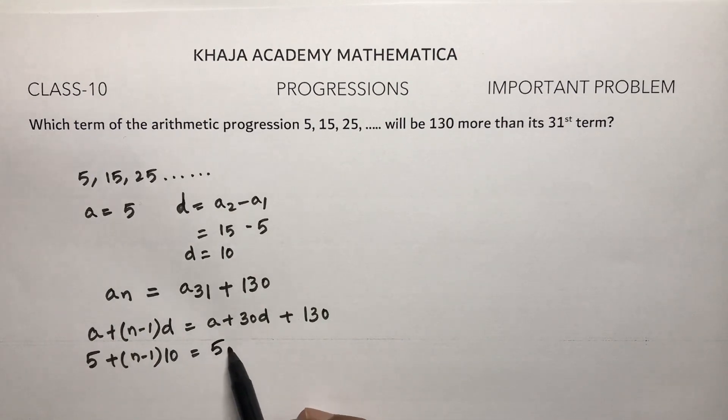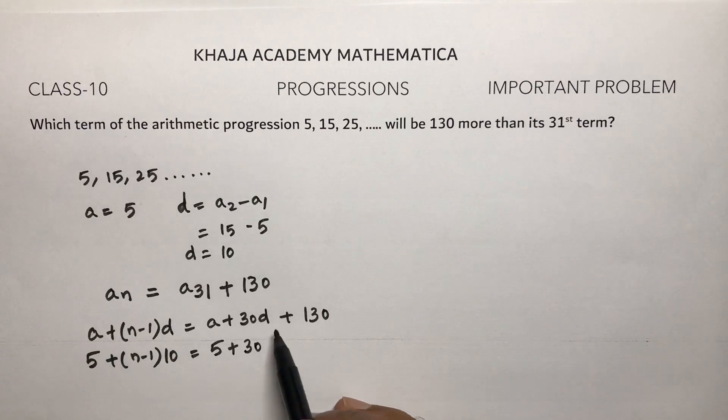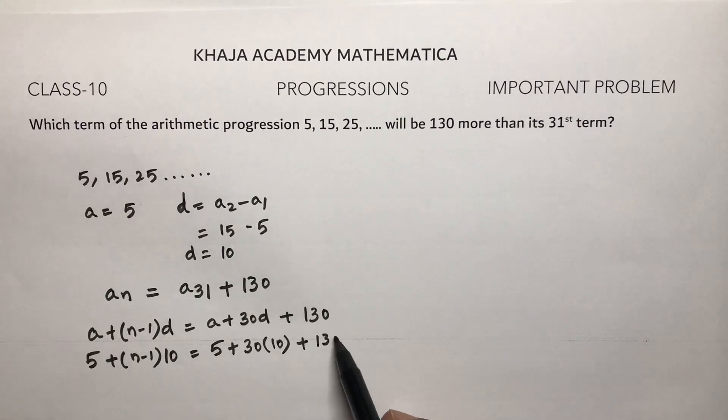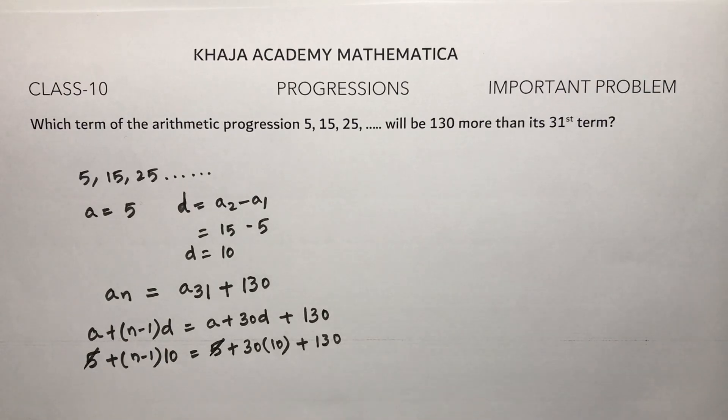5 and 5 you can cancel. So (n-1) times 10 equals 300 plus 130, which is 430.